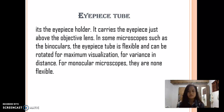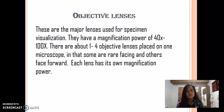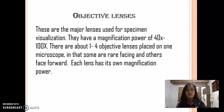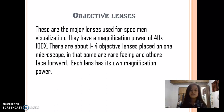For monocular microscopes, they are non-flexible. Objective lenses — these are the major lenses used for specimen visualization. They have a magnification power of 40 times to 100 times. There are about 1 to 4 objective lenses placed on one microscope, where some are rear-facing and others face forward. Each lens has its own magnification power.